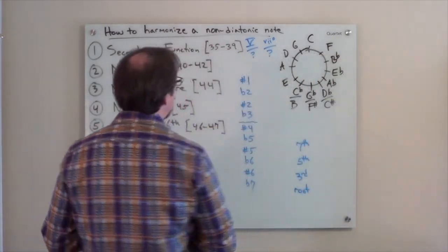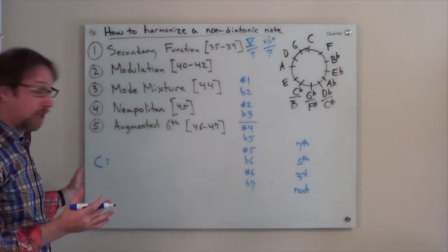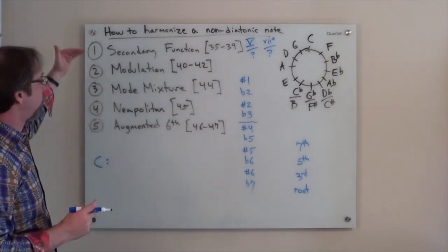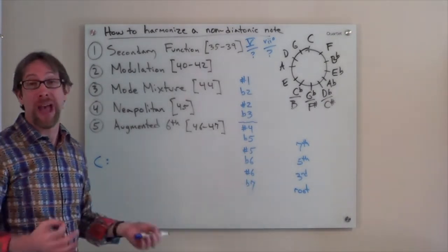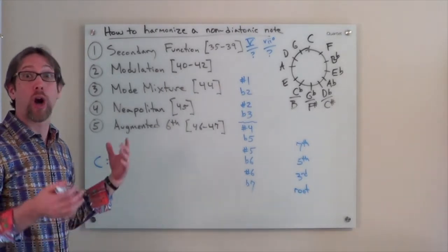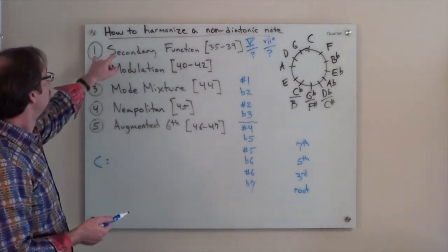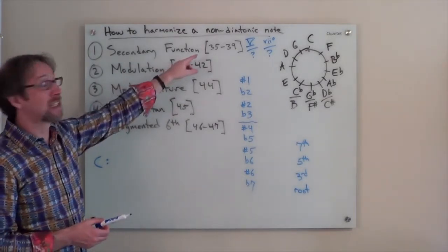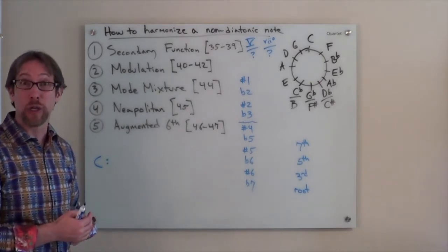So how to harmonize a non-diatonic note, which is just another way of saying a note that's not in the scale that you started with or not in the key. For simplicity, we're going to use C major as our home key. Any one of the five methods of five different kinds of chromatic harmonies are going to be a great place to start. One of the things that we can use is a secondary function, and I talk about this in Lessons 35 through 39.